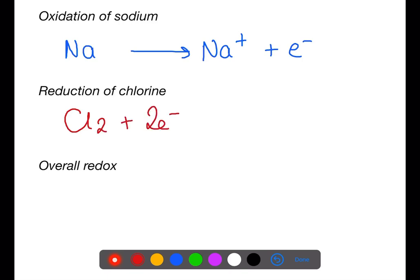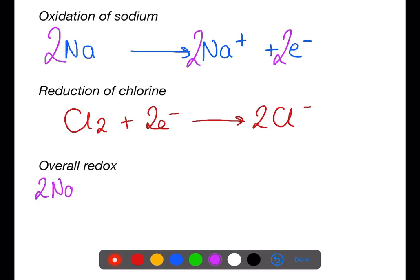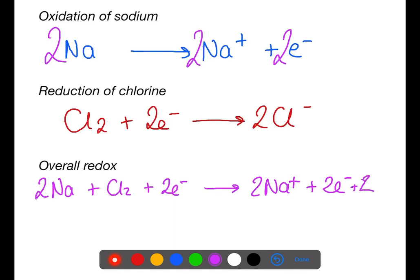Because chlorine is diatomic, two electrons are needed — one for each atom — to form two chloride ions. To combine the equations, the first equation needs to be multiplied by two so that they have the same number of electrons. The whole equation is multiplied by two. We then combine everything on the left-hand side together and everything on the right-hand side together. We can then cancel the electrons from either side and rewrite the overall redox equation.